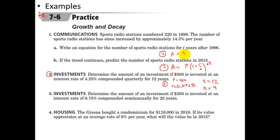Plugging in: A equals 500 times one plus 0.0425 divided by 4, raised to the power 4 times 12. In your calculator, do the inside part first — 1 plus 0.0425 divided by 4 — then raise that result to the 48th power. This is why you need an exponential function on your calculator. Then multiply that entire result by 500. We get A equals $830.41.